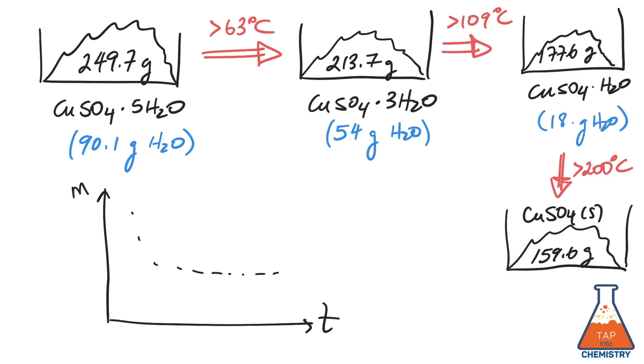Continuing to heat to 109 Celsius will drive off two more waters to make the monohydrate, and heating above 200 Celsius will eventually drive off the last water of hydration to make the anhydrous copper sulfate.